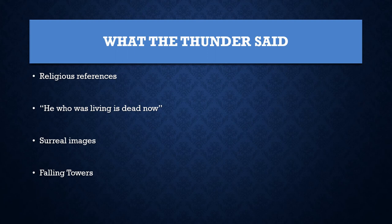The poet refers to the River Ganges in India, and the title 'What the Thunder Said' is a message from the Brihadaranyaka Upanishad. Before that, the falling towers of various cities are introduced — Eliot mentions not just London but the whole of Europe.